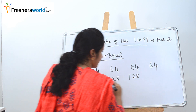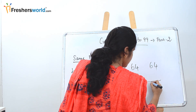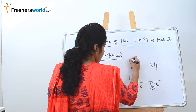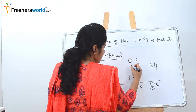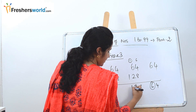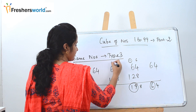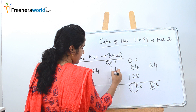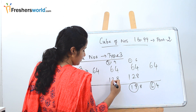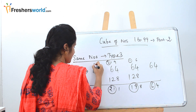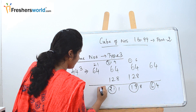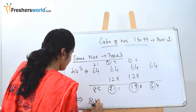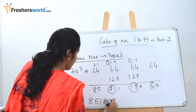Now we add the columns for 44 cube. Starting from the right: 64, carry 6. 6 plus 4 is 10, then 18, write 1 carry 7, then 9. Carry 19 over to the next column: 13, then 21, write 2 carry 3, then 9, then 11, write 1 carry 2, then 21. Carrying 21 over gives 85. So the answer is 85,184.